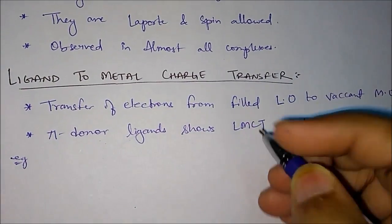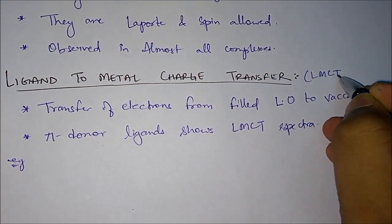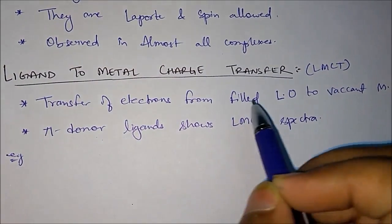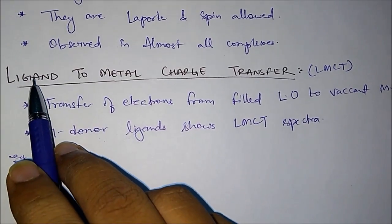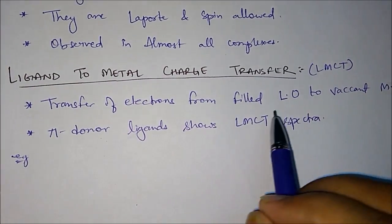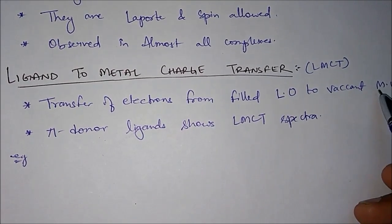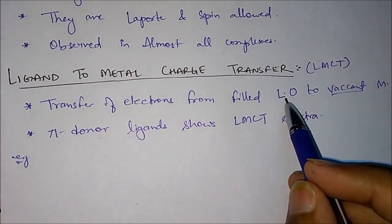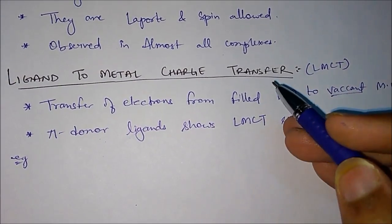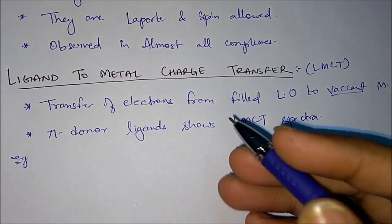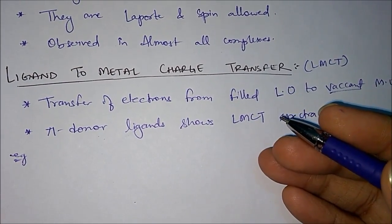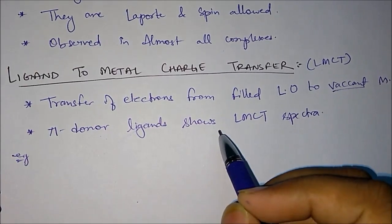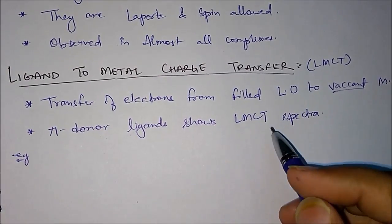We will start with ligand to metal charge transfer, which is also called LMCT in short. As the name suggests, transfer of electrons will be done from ligand to metal. This transfer will occur when the ligand orbital is filled and the metal orbital is vacant. LMCT is generally shown by pi donor ligands.